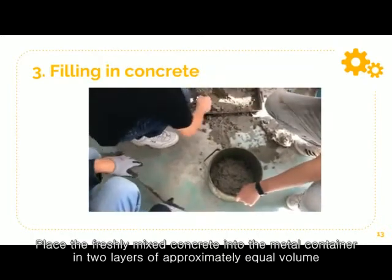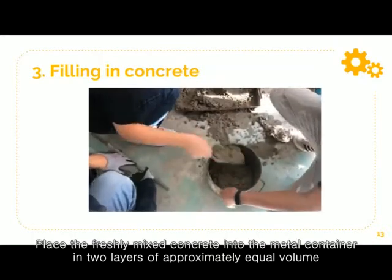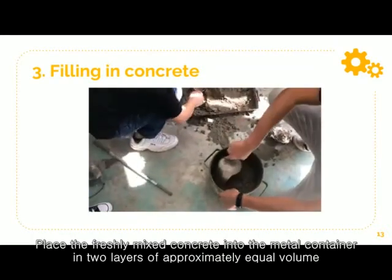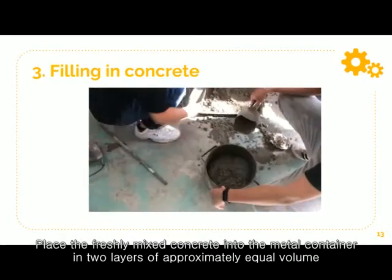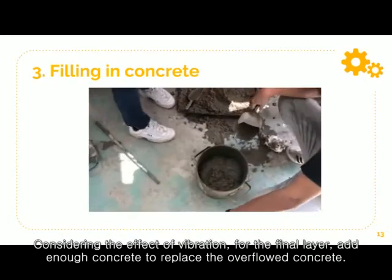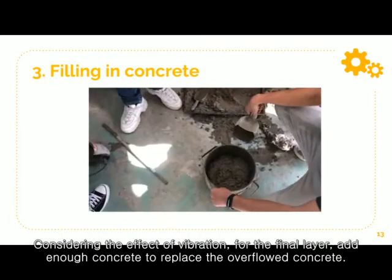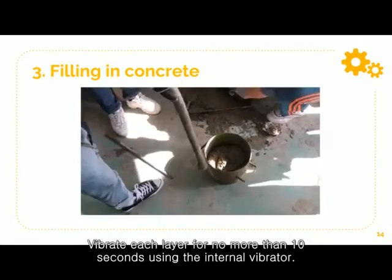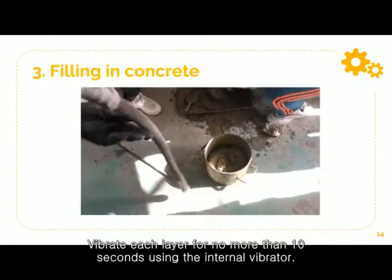Place the freshly mixed concrete into the metal container in two layers of approximately equal volume. Considering the effect of vibration, for the final layer add enough concrete to replace any overflowed concrete. Vibrate each layer no more than 10 seconds using the internal vibrator.